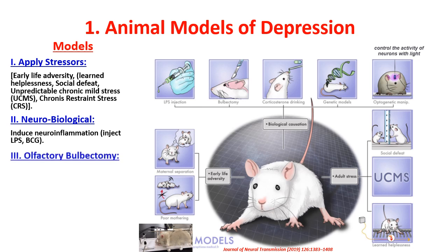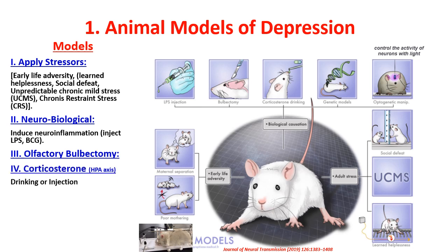The third method is surgical — olfactory bulbectomy — where the olfactory bulb is removed because it plays a very important role in mood.